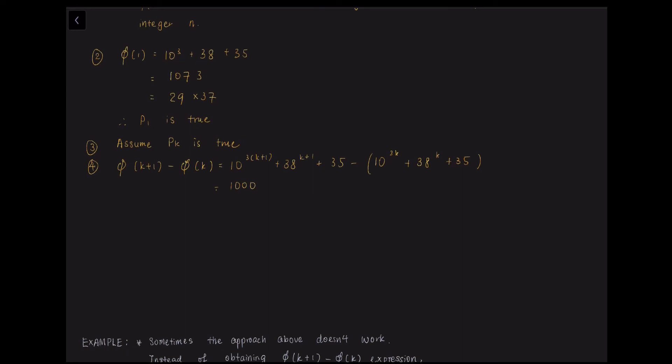And we know that 10 to the power of 3 is 1000. So 1000 times 10 to the power of 3K plus, and 38 times 38 to the power of K is 38K+1. They are the same. And then minus 10 to the power of 3K minus 38 to the power of K. And we know that the 35 cancels.